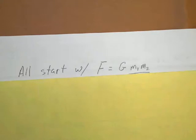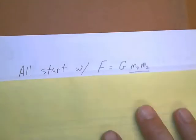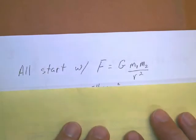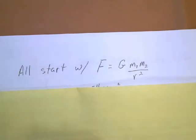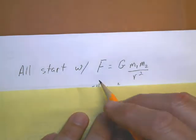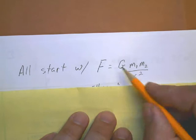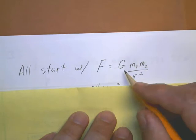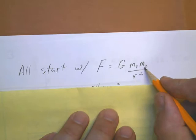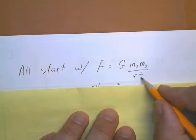Alright, now remember for these problems, they all start with Newton's universal law of gravitation, which is the force of gravity exerted by two objects equal to G, big G, the universal gravitational constant, times the mass of the first object, times the mass of the second object, divided by R squared, where R is the distance between them.